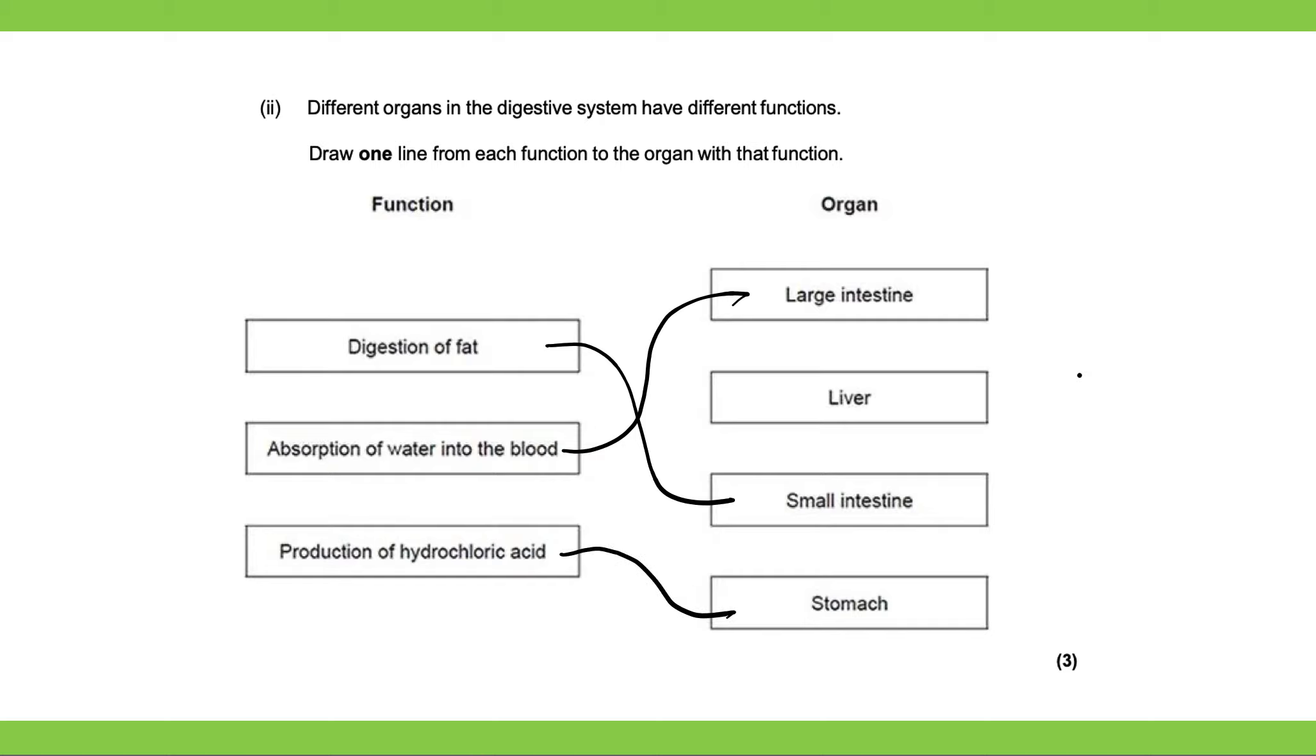Okay, the liver produces bile. If we had an option for production of bile, we would draw that to the liver. Okay, but those three we had before in the correct places will get you three marks.